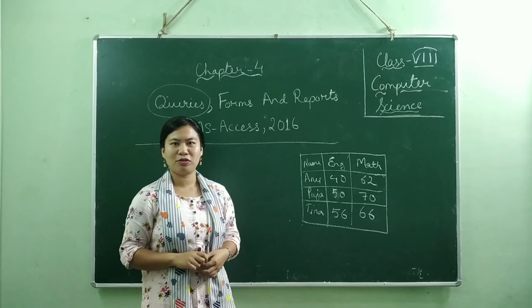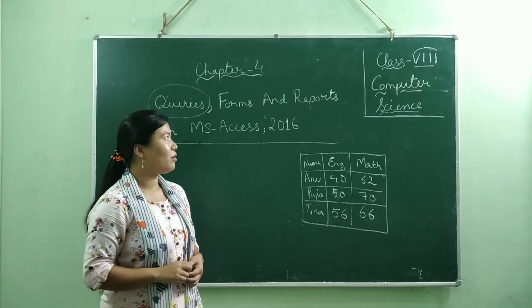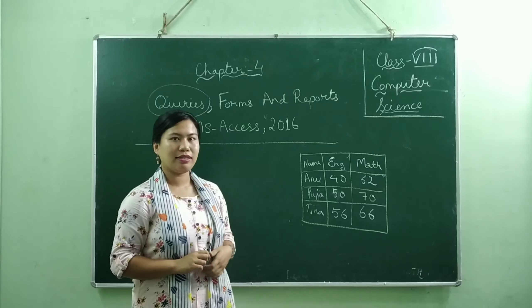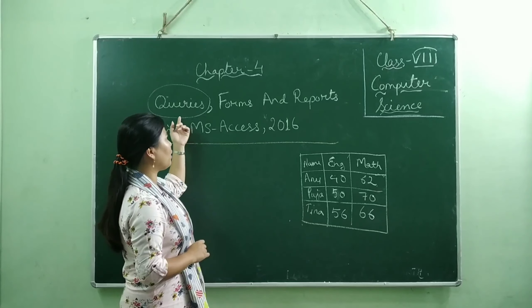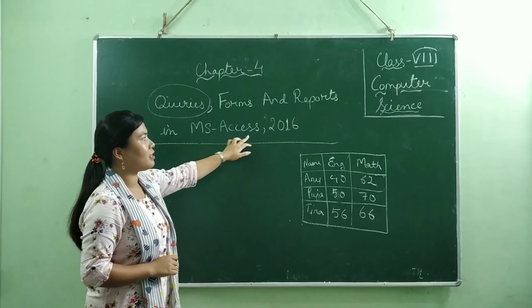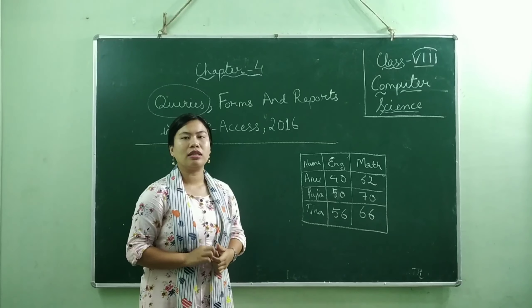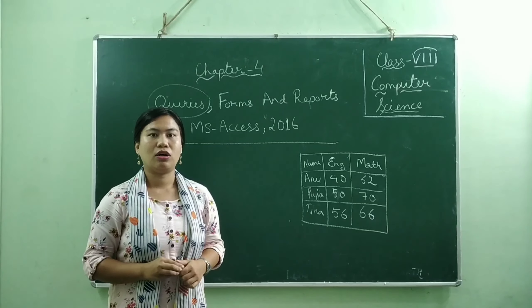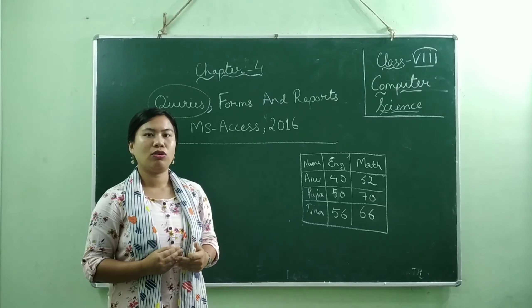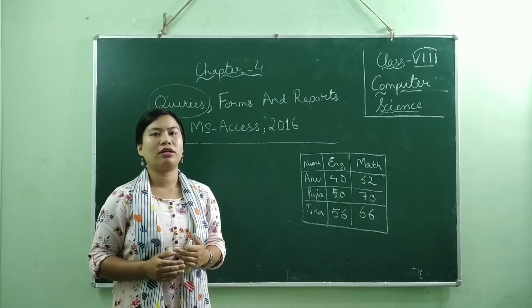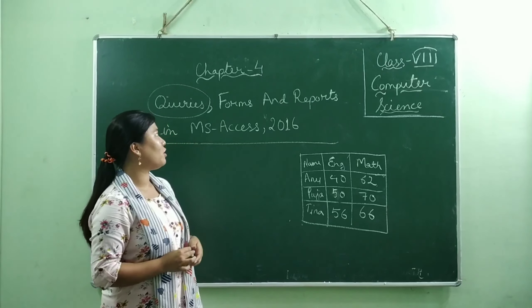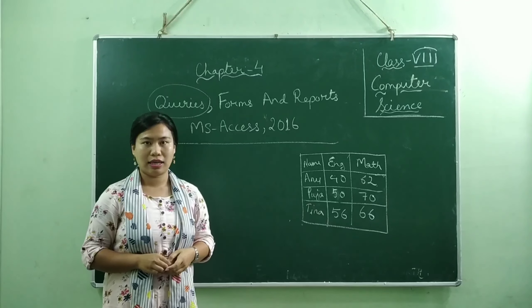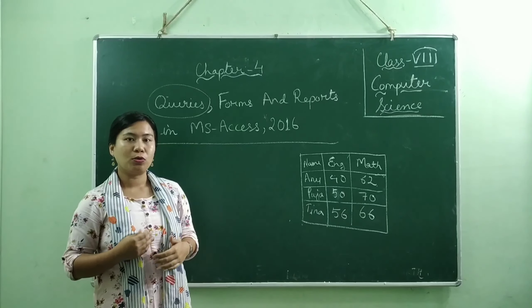Hello, my dear students. Today we are going to learn a new lesson, Chapter 4 from Class 8, and the name of the lesson is Query, Forms, and Reports in MS Access 2016. In the previous chapter, you have already learned how to create a table, how to put the primary key, and everything. So now in this next chapter, we are going to learn about queries, forms, and reports in MS Access.